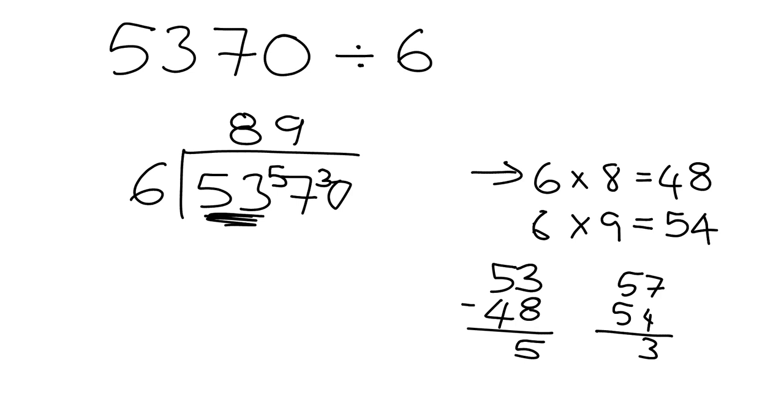So that three that's left over can pass on and go with that zero. Now I'm saying six into 30, and I hopefully know my times table well enough to know that six fives are 30, so it's five. So the answer here is 895.